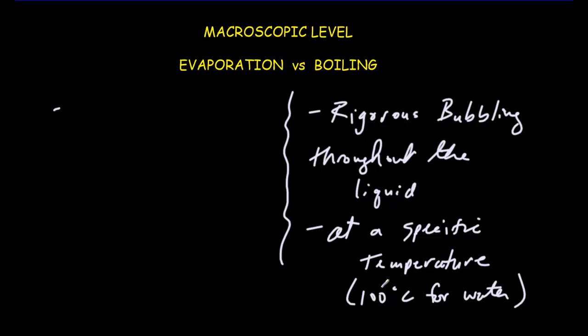And let's compare that to evaporation. First of all, evaporation is a much slower process. It takes a long time for the level of the liquid to go down in evaporation, whereas it goes down quite quickly when a liquid is boiling. Secondly, it occurs at any temperature. There's no specific temperature at which it occurs. And thirdly, it must occur at the surface.